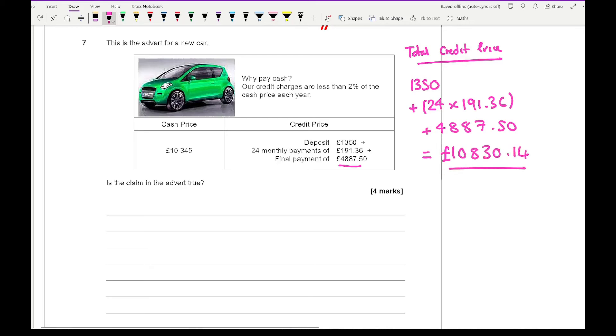Comparing the cash price which is £10,345, I could use percentage change. Over two years we're looking at less than 4% of the cash price. Using the percentage change formula, I work out the difference.